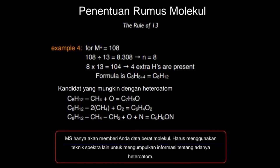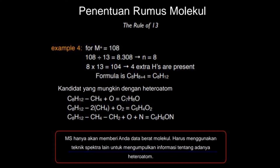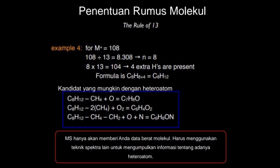Mass spec hanya akan memberi data berat molekul. Harus menggunakan teknik spektra lain, misalnya NMR — ada H-NMR dan C-NMR — untuk mengumpulkan informasi tentang adanya heteroatom. Jadi contoh-contoh tadi hanya pemisalan: apabila mengandung oksigen, apabila mengandung 2 oksigen, atau apabila mengandung oksigen dan nitrogen. Rule of 13 ini hanya gambaran kasar dan tidak bisa menentukan secara pasti keberadaan heteroatom seperti oksigen, nitrogen, dan yang lain-lainnya.